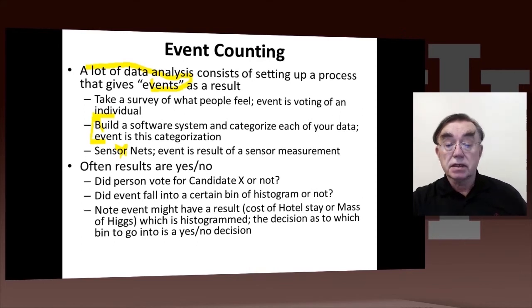For surveys, the answers to individual questions are often yes or no. In the case of the physics, the answer's not initially yes or no, but after the software, it eventually ends up yes or no, because the result is gonna be a histogram.